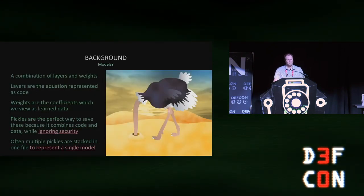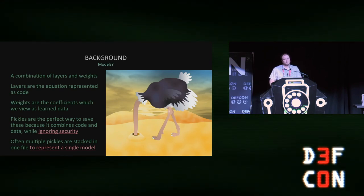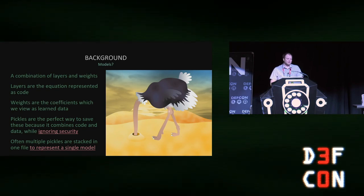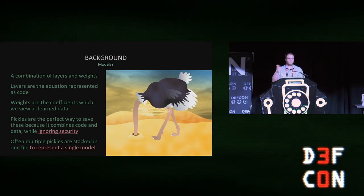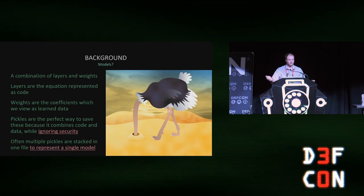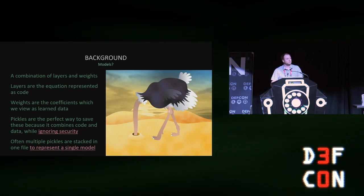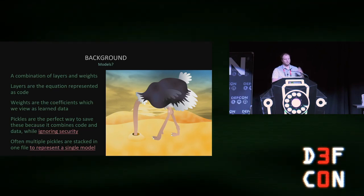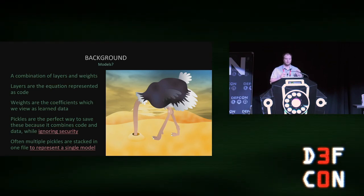Models are used in artificial intelligence and machine learning. They're a combination of layers and weights. A layer is the mathematical equation that lets you give it one input, like an image, and it goes through this equation and gives you a label — like cat, dog, chicken, ostrich, whatever it is. These layers we represent as code in Python, specifically for the Python frameworks. The weights are the coefficients for that equation — it's really just the data that's trained. So when we're training models, we're training the weights, and that can just be viewed as data.